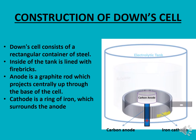Now we are going to discuss the construction of the Down Cell step by step. As you can see in the diagram, the Down Cell consists of a rectangular container of steel, and the inside of the tank is lined with fire bricks. The anode is a graphite rod which projects centrally up through the base of the cell, and the cathode is a ring of iron which surrounds the anode.